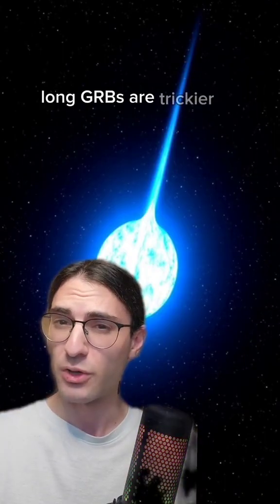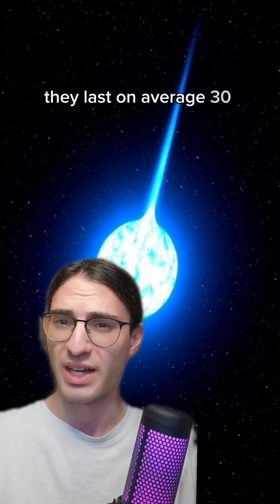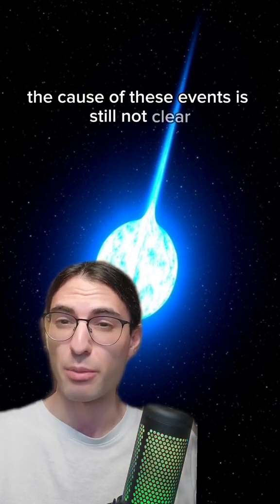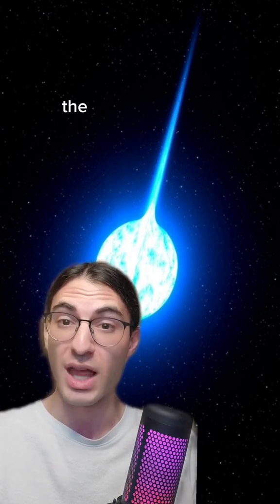Long GRBs are trickier to explain. They last on average 30 seconds, and they're believed to be caused by a particular type of stellar eruption called a hypernova. The cause of these events is still not clear, but one of the leading models is called the Collapsar model.